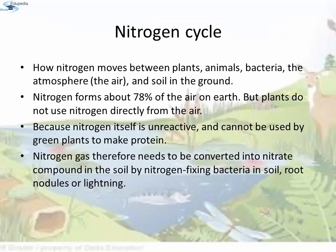Nitrogen Cycle: The nitrogen cycle describes how nitrogen moves between plants, animals, bacteria, the atmosphere (air), and soil. Nitrogen forms about 78% of the air on earth, but plants do not use nitrogen directly from the air because nitrogen itself is unreactive and cannot be used by green plants to make protein. Nitrogen gas therefore needs to be converted into nitrate compounds in the soil by nitrogen-fixing bacteria in soil, root nodules, or lightning.